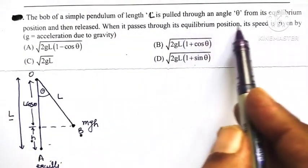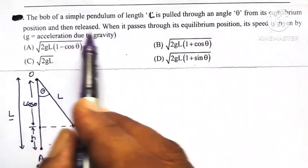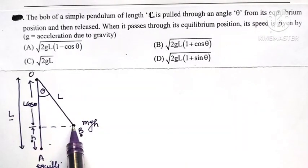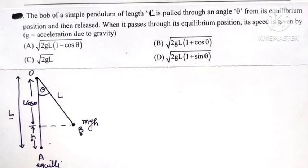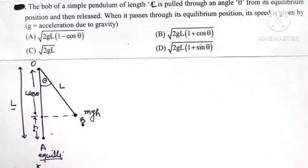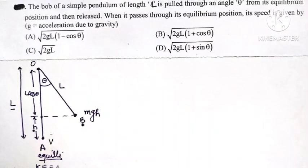When we release the bob from position B, the extreme position, and it reaches its equilibrium position, the bob has only kinetic energy. If v is the maximum speed, then the kinetic energy of the bob is half mv squared.